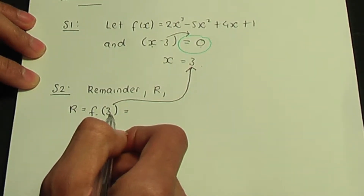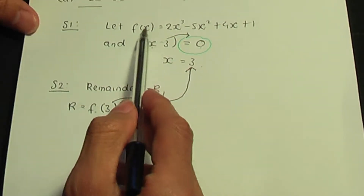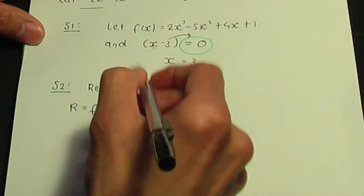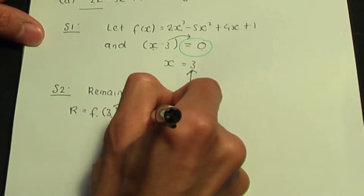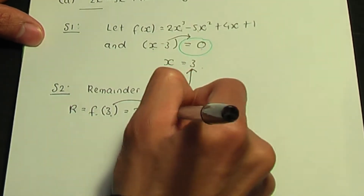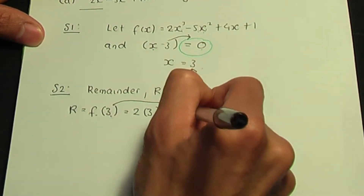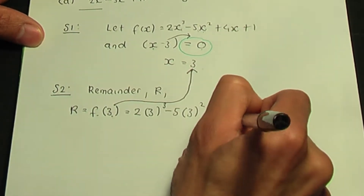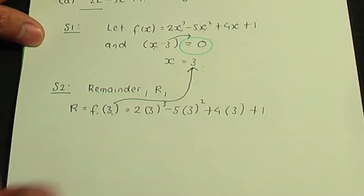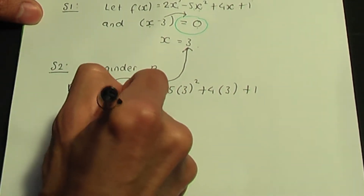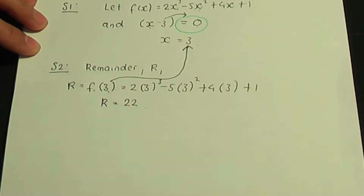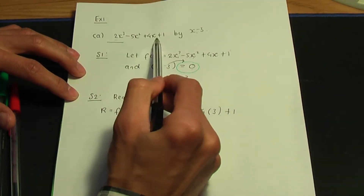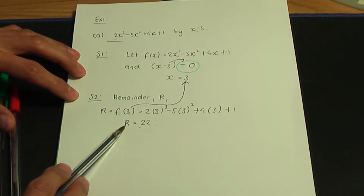To work out f(3), it's straightforward. All you do is replace the x's by 3's. So I get 2 times 3 cubed, minus 5 times 3 squared, plus 4 times 3, plus 1. When you calculate this, the answer is 22. So this is the remainder when you divide this polynomial by x minus 3, using the remainder theorem.